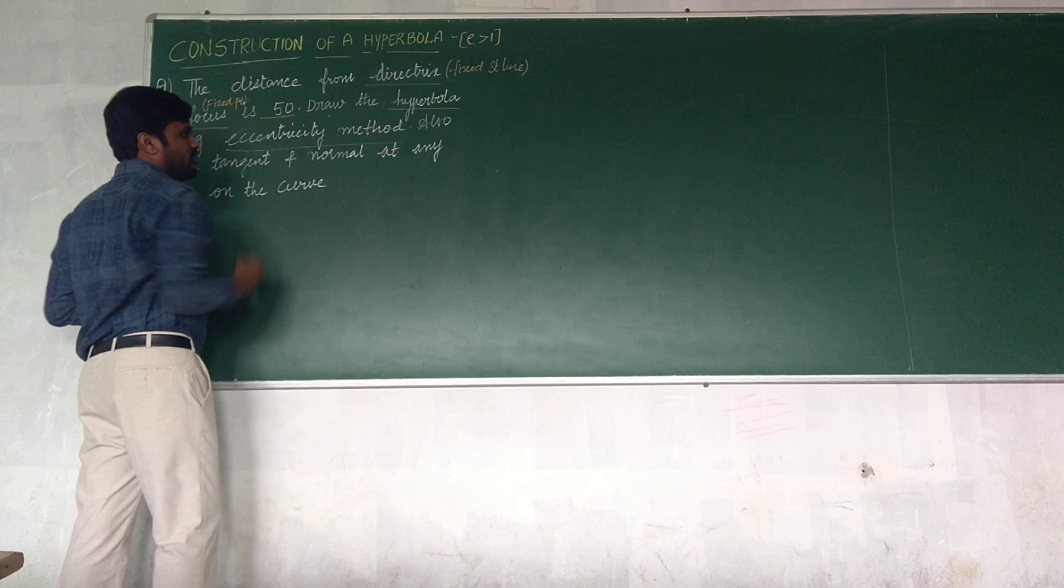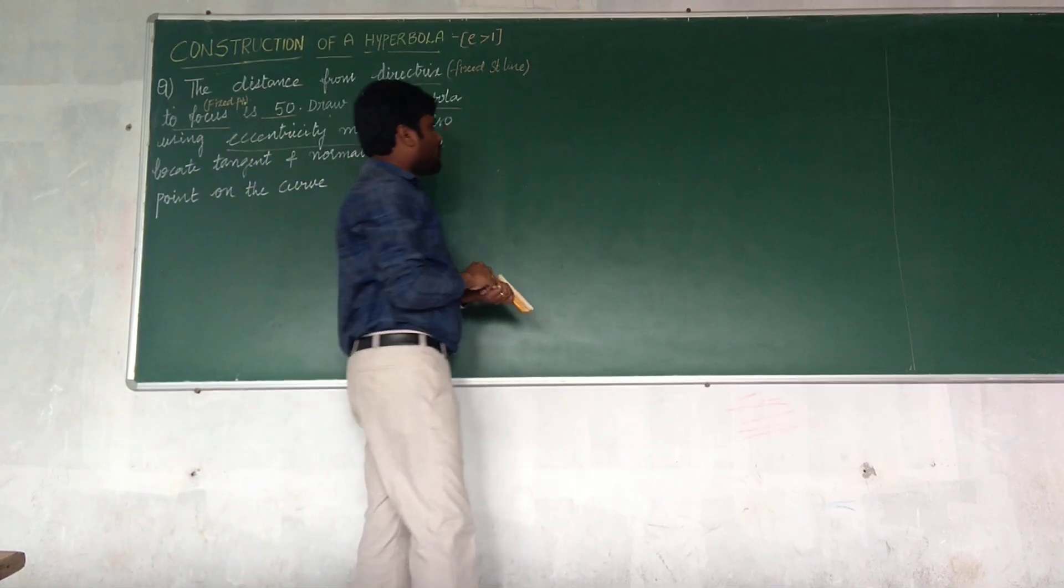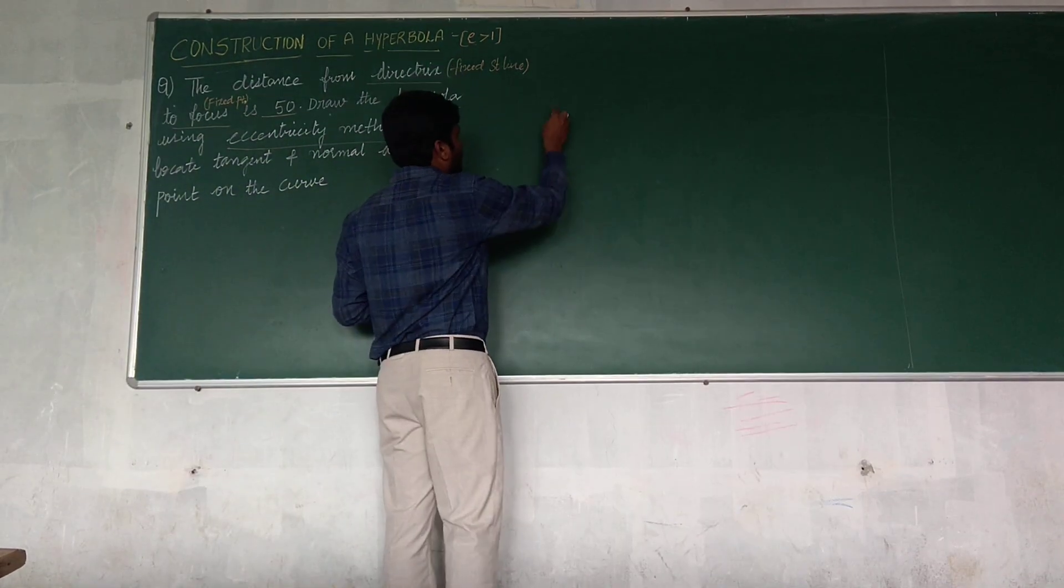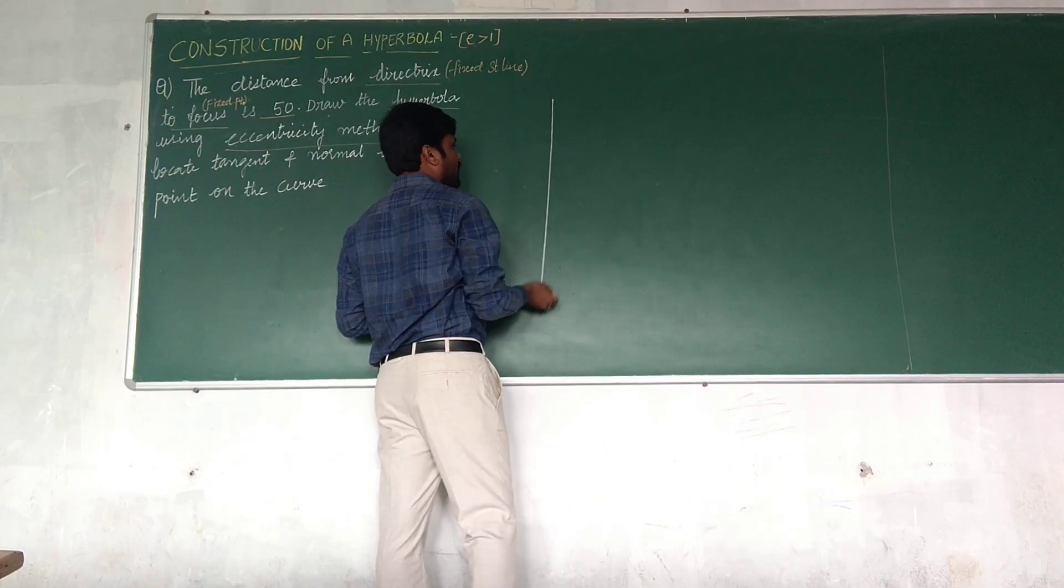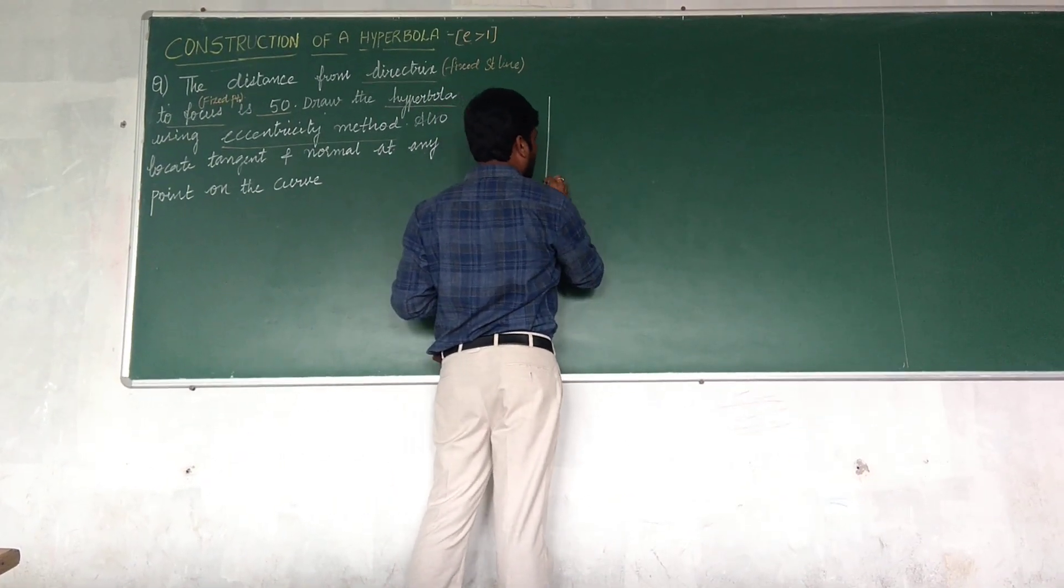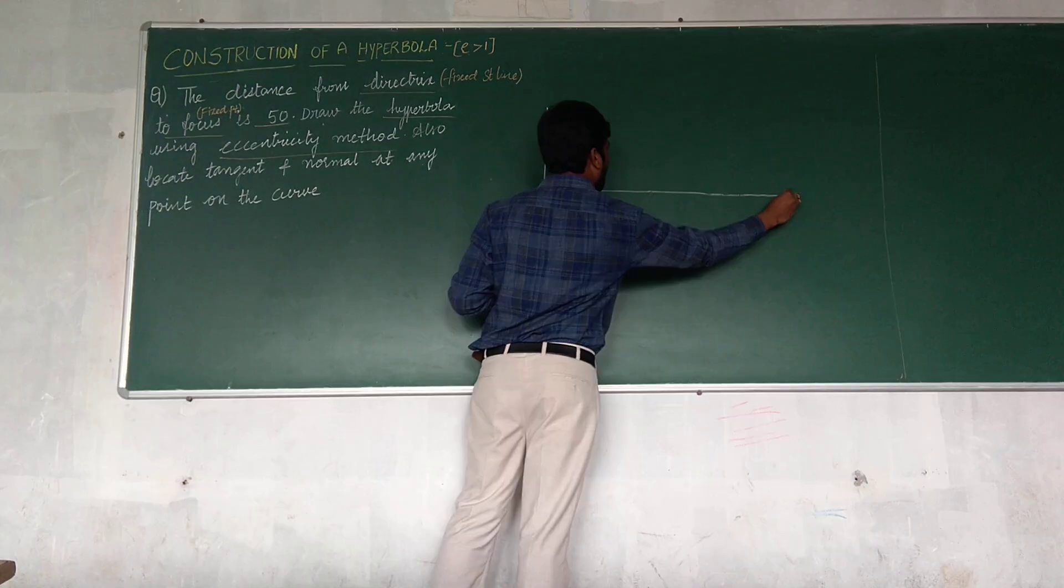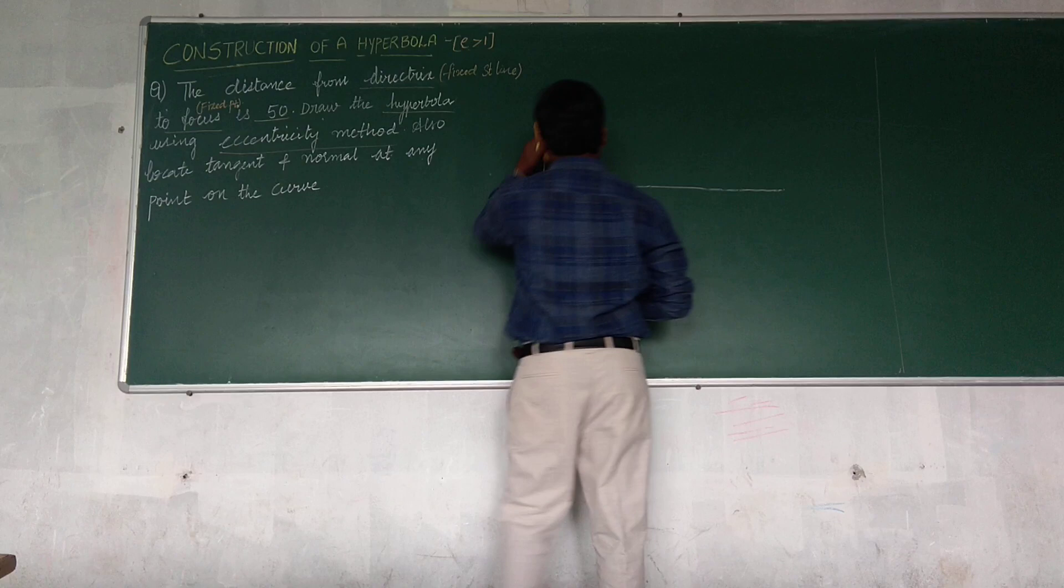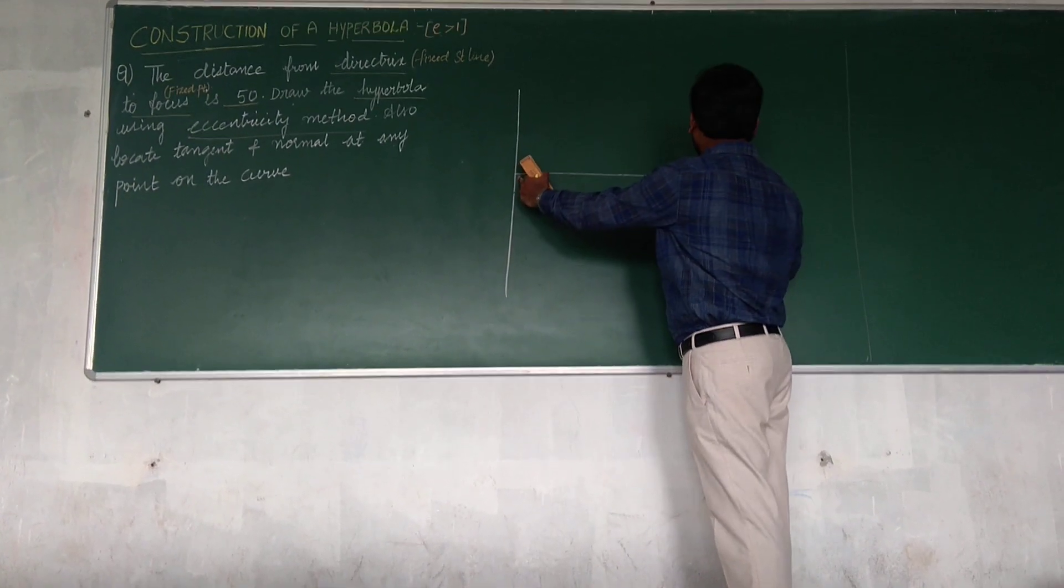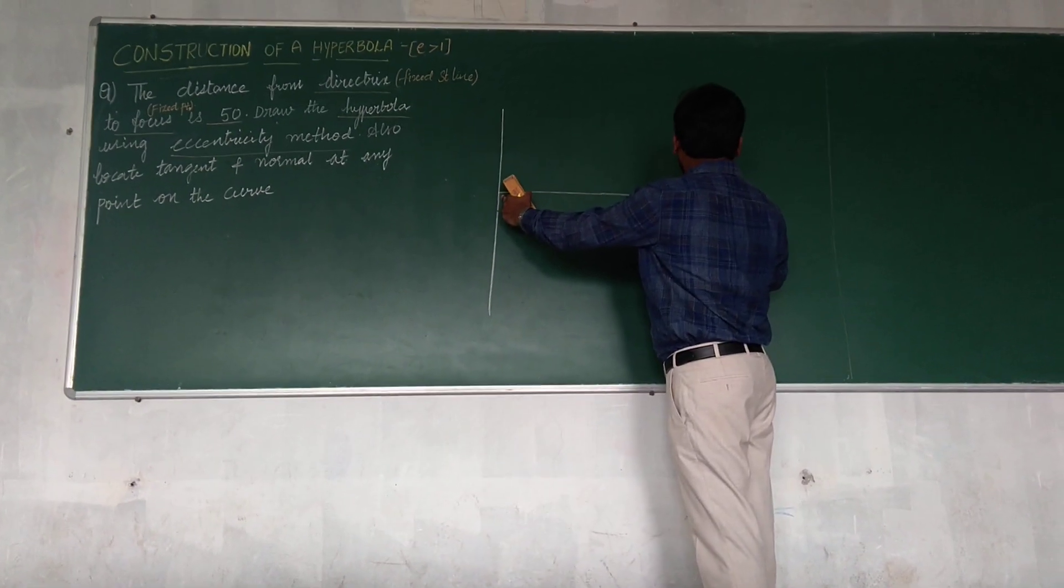The distance given is 50. So in order to trace a hyperbola, first I need to locate a horizontal line as directrix, perpendicular to this a vertical line which is nothing but axis. Axis line passing or perpendicular to the directrix.